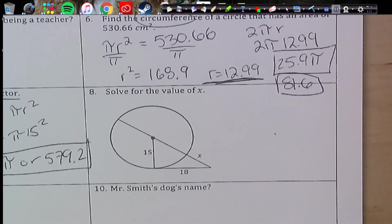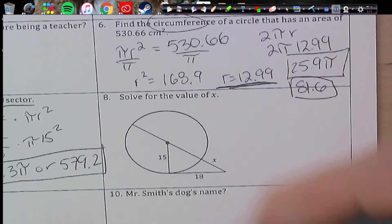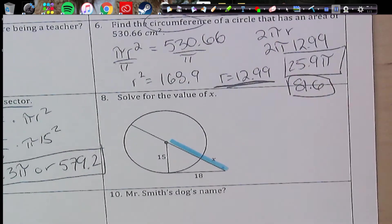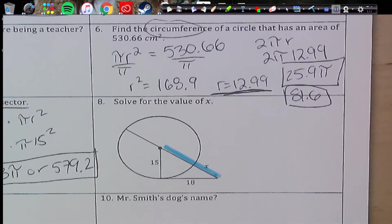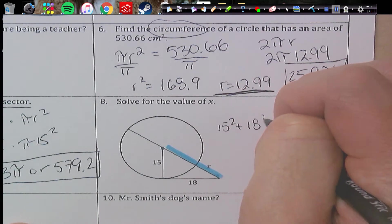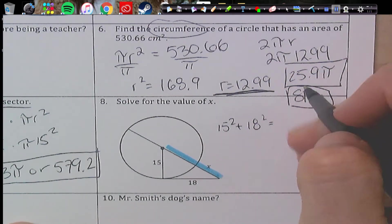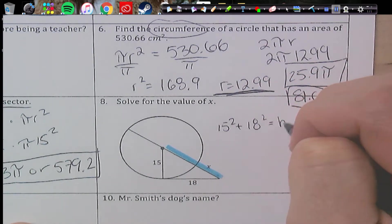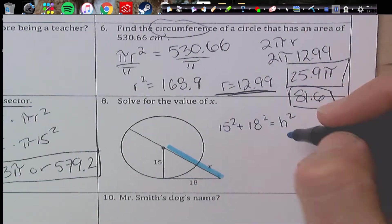Number 8. Solve for the value of x. So I'm actually going to pretend that I'm just solving for this whole piece here, and use Pythagorean theorem. 15 squared plus 18 squared equals, I'm going to use hypotenuse. That's the h squared. So I'm solving for that piece.